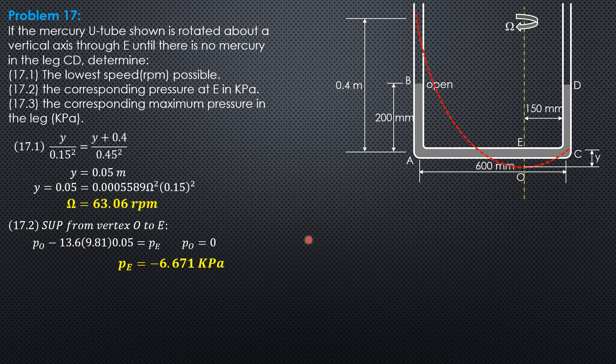Then for the corresponding maximum pressure in the leg, because point A is the point farthest from the surface of 0 pressure, then the maximum pressure occurs at A. So the pressure here is specific weight of mercury times height, and the height is 0.4. So pressure at A is maximum pressure: 13.6 times 9.81 times 0.4. So pressure at A or pressure maximum is 53.37 kilopascals.